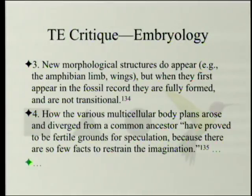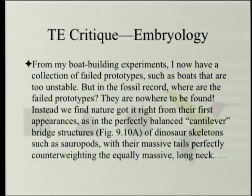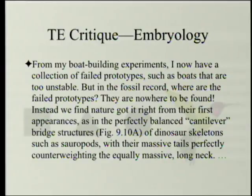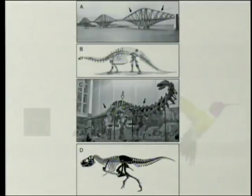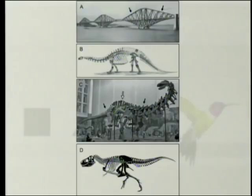Nobody really knows. From the author's boat-building experiments, there is a collection of failed prototypes — boats that are too unstable. But in the fossil record, where are the failed prototypes? They are nowhere to be found. Instead, nature got it right from the very first appearances — as in the perfectly balanced cantilever bridge structures of dinosaur skeletons, such as sauropods with their massive tails perfectly counterweighing the equally massive long neck. In the illustration, notice the remarkable similarity between the cantilever structure and the skeleton of a brontosaurus or apatosaurus — even a meat-eating dinosaur like Tyrannosaurus, with the long vertebrae at the middle corresponding to the bolts over the bridge.